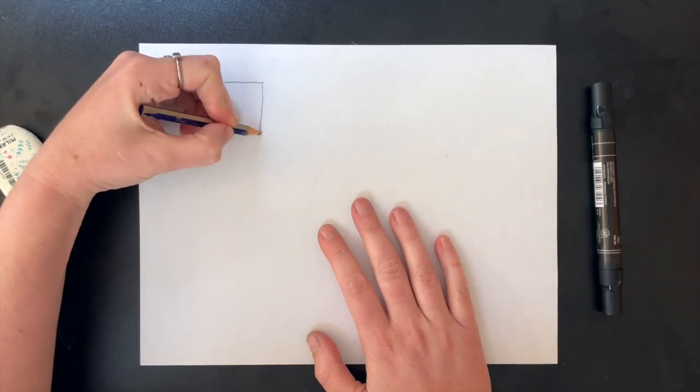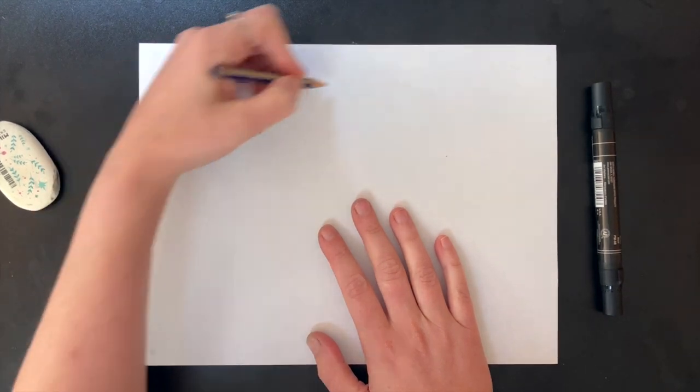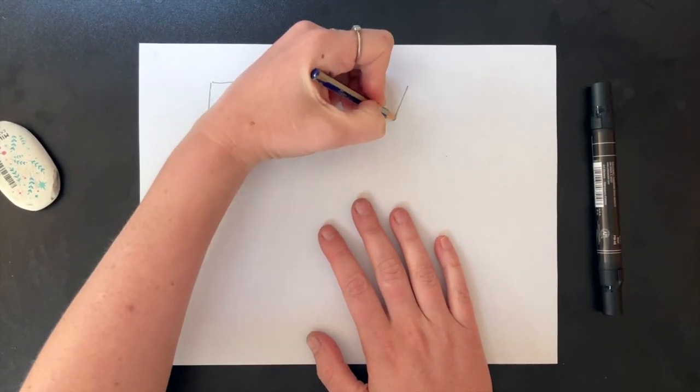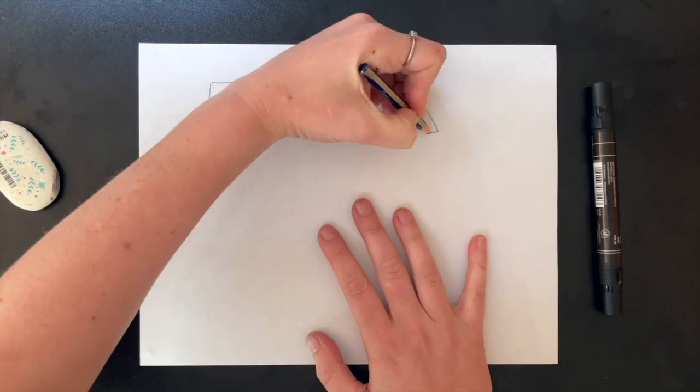Now that you're comfortable drawing scribble knots, I'm going to show you how to use some basic shapes as frameworks to make knots that look organized or symmetrical.